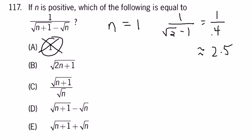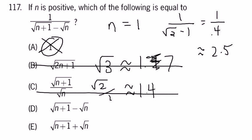1 is obviously not close to 2.5. Square root of 2N plus 1 would be the square root of 3, which, it's useful to know, is about 1.7. Square root of N plus 1 divided by square root of N is about 1.4. Wrong. Root N plus 1 minus root N is about 0.4. Wrong.